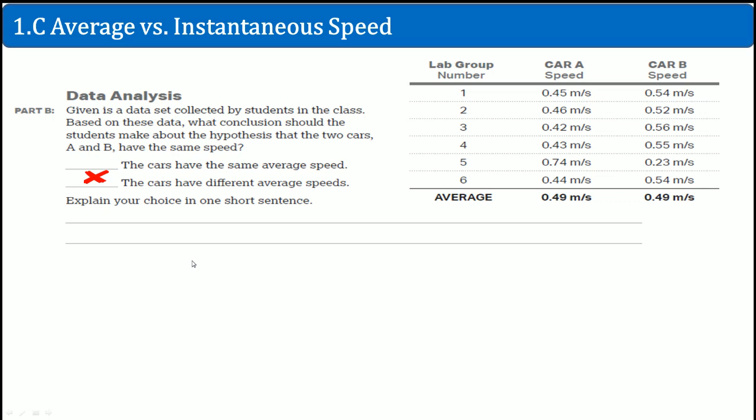On the free response, you're going to see a table will be given to you. Now here, it says, given is a data set collected by students in the class. Based on these data, what conclusion should the student make about the hypothesis that the two cars, A and B, have the same speed? I already gave you the answer. I said that the cars have different average speeds. Why is that? Let's take a look.